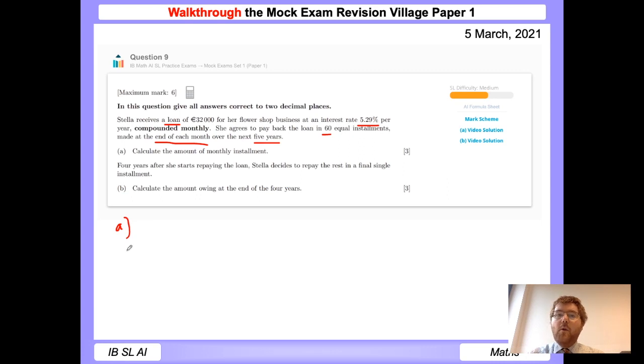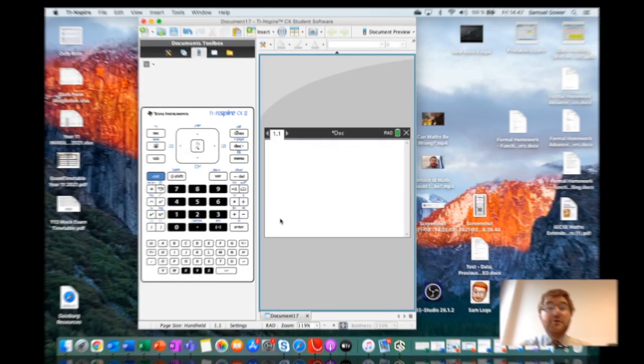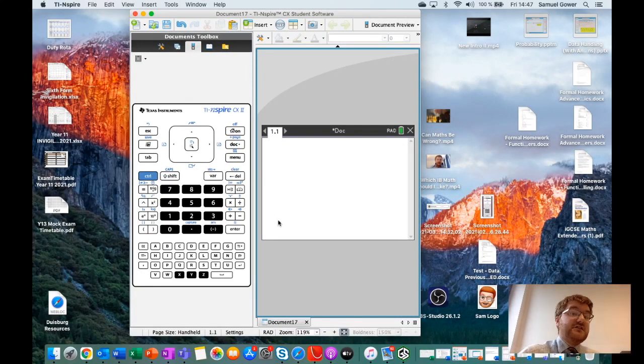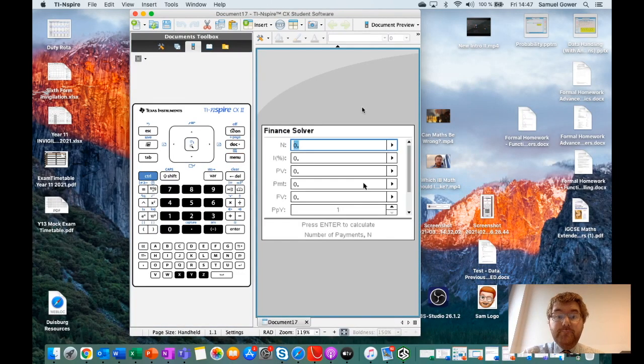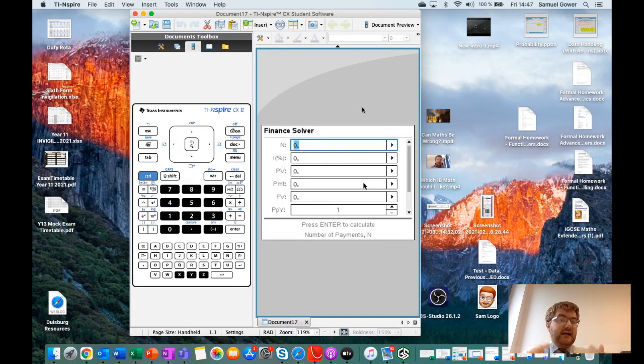Okay, let's keep going. So let's now think about what we're going to write into our GDC. So we need to think about our present value, our final value, our N, which I'll talk about later on, our I, our CPY, and our PMT. Now all these options are on your GDC. So that's what we're going to look at now. So from your normal calculator view, to get the finance solver, you need to click our menu, finance, and finance solver. And then you've got all the options that I wrote down in the previous part of the video. So now let's fill in what we know.